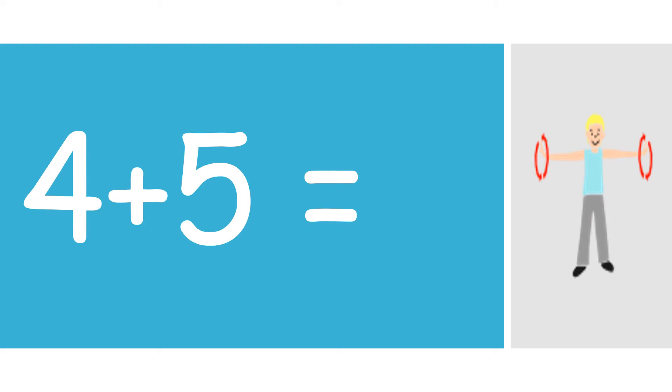4 plus 5 equals what? You can count on, use your counters, draw a picture, or use your hands. If you look at two hands, you have a total of 10 fingers. 5 plus 5. But 5 plus 4 is just taking away one of those fingers. And so your answer is 9. Do 9 arm circles.